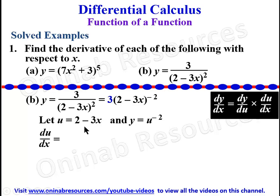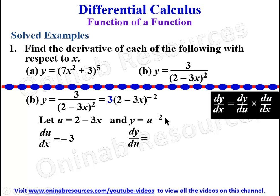Finding du/dx: the derivative of a constant is zero, so we differentiate -3x. The power of x is 1, so 1 × (-3) = -3, and reducing the power gives x⁰ = 1, so du/dx = -3. For dy/du: multiply by the index -2 and reduce the power by one, giving -2u⁻³, since -2 - 1 = -3. Substituting back u, dy/du = -2(2 - 3x)⁻³.